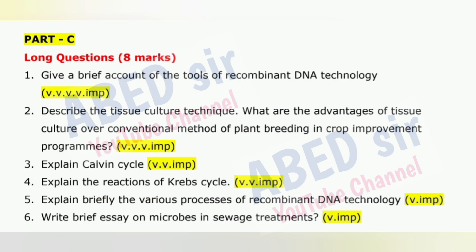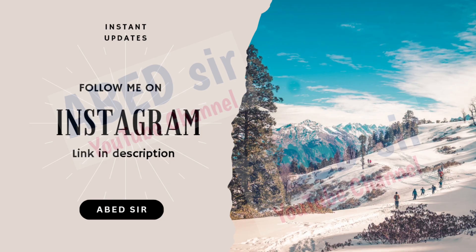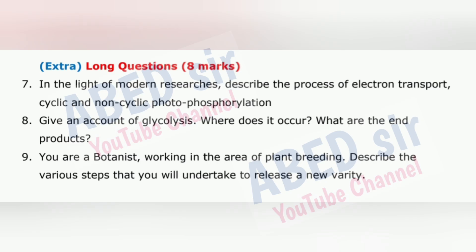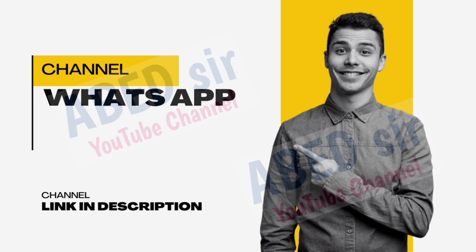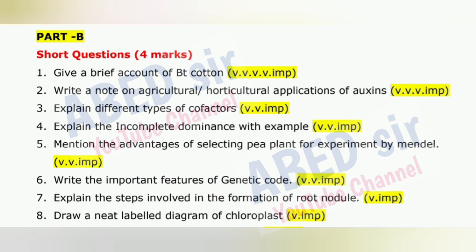On screen you may see each section's important questions. For long questions, write down your answer up to three sides of pages and, depending on the question, write down the definition with example, explanation with diagram and tables. For short questions, write down your answer on one side of the page with definition, example, explanation, diagram and table. For very short questions, write down your answer in half a page with definition, diagram and example.